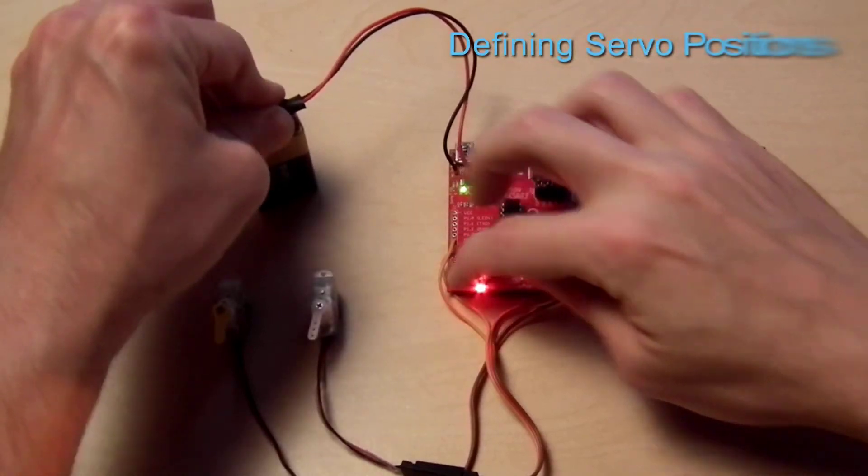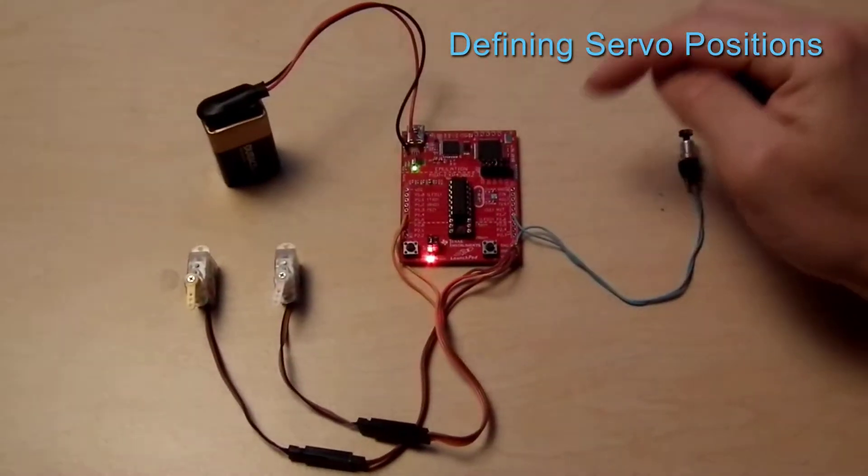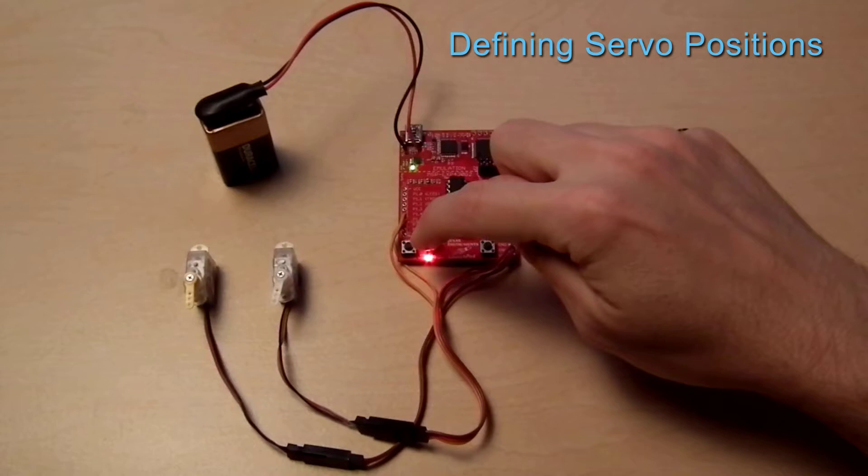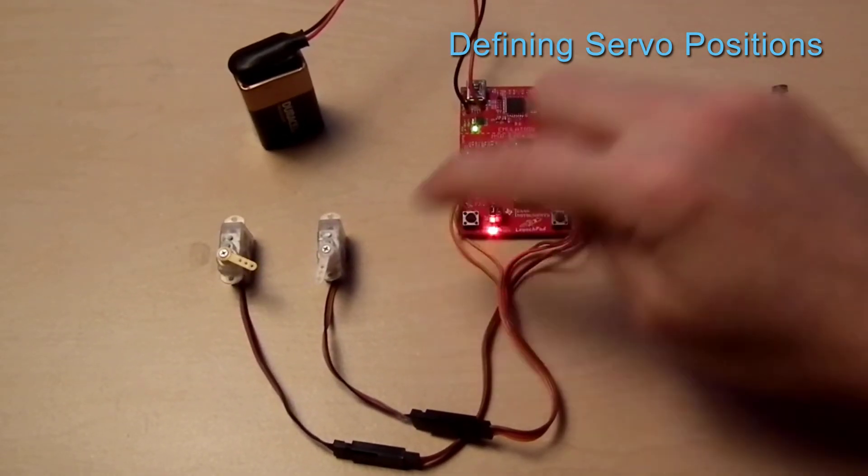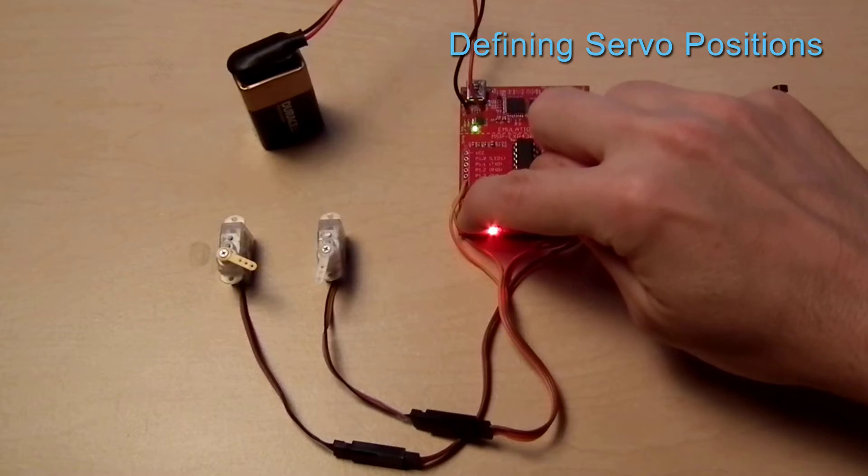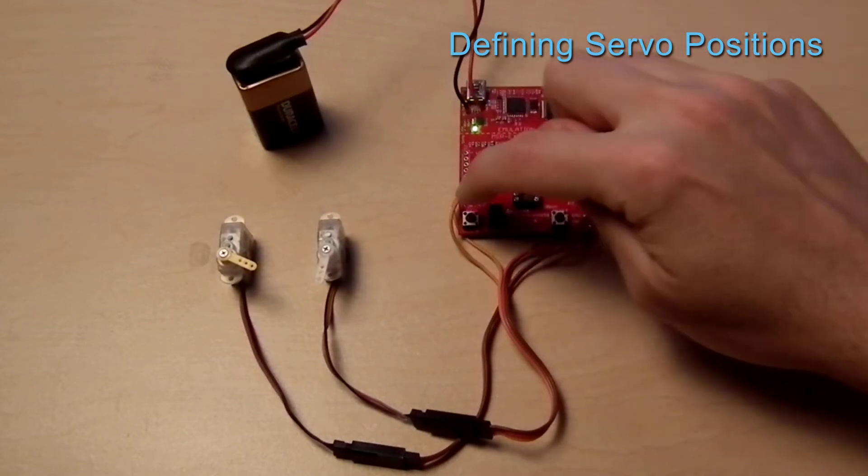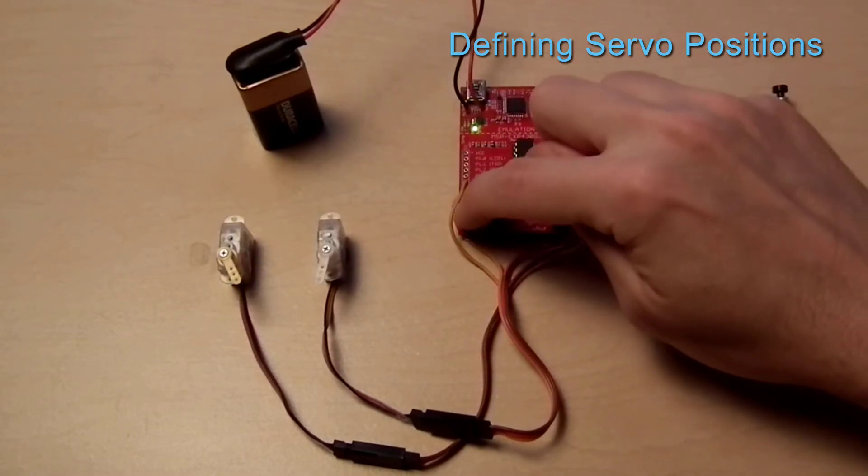The two positions for each servo are set by holding the mode button in while powering up. The red LED lights to show that servo A is being set. The home position is set first by tapping the mode button until the desired spot is reached, then the mode button is held in for one second to save the home position. The deploy position of servo A is now set in the same way.